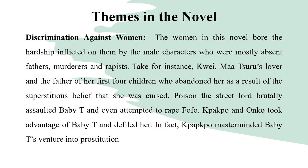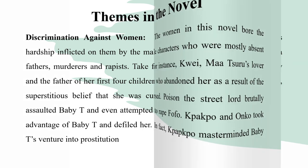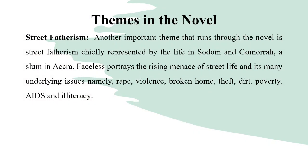The next theme is street thuggery, or what the author calls 'street fatherism.' Poison was effectively in charge of the entire slum — collecting money from marketers, selling girls into prostitution, raping girls at will. He was like a godfather in that slum. Ama Ata Aidoo links street fatherism to underlying issues including rape, violence, broken homes, theft, poverty, AIDS, and illiteracy.